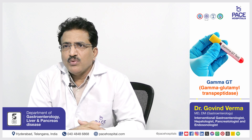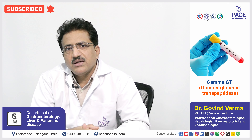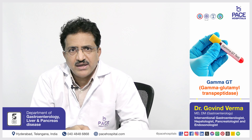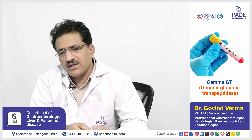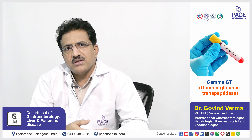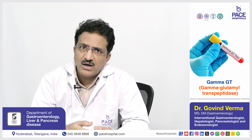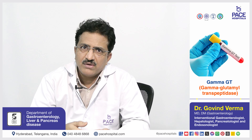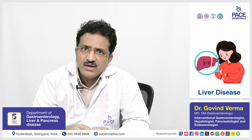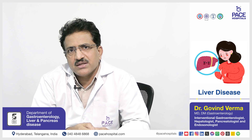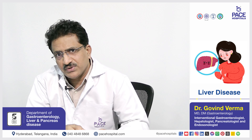Gamma-GT (gamma glutamyl transpeptidase) is most commonly done when alkaline phosphatase is high. It helps differentiate the source of raised alkaline phosphatase. Since alkaline phosphatase can be elevated in bone disorders, placental conditions, and biliary or hepatocellular disease, gamma-GT is used to identify the origin. If both gamma-GT and alkaline phosphatase are high, the source is liver or biliary pathology.